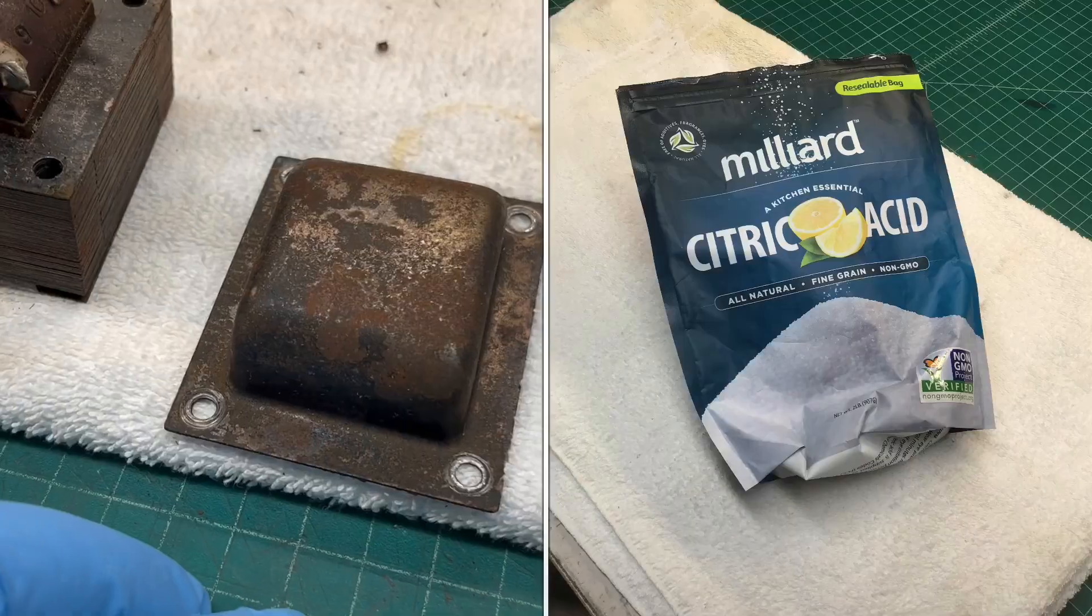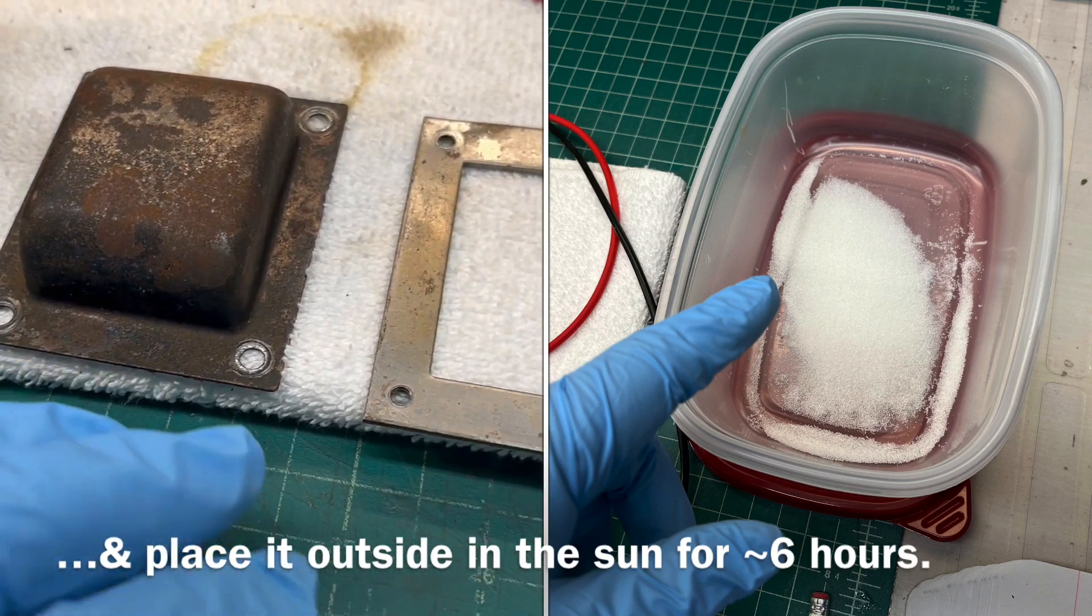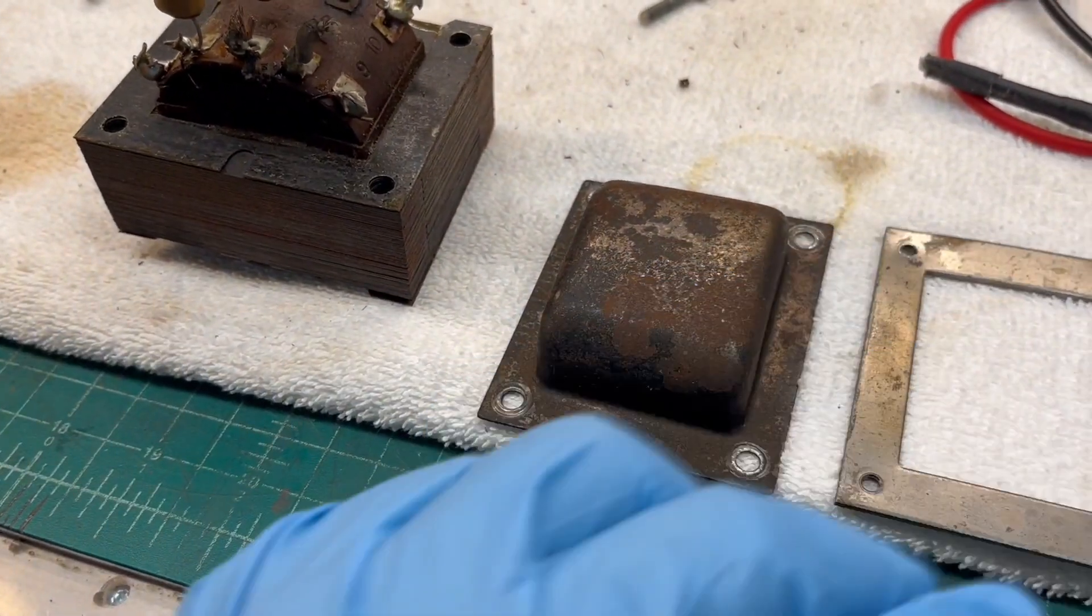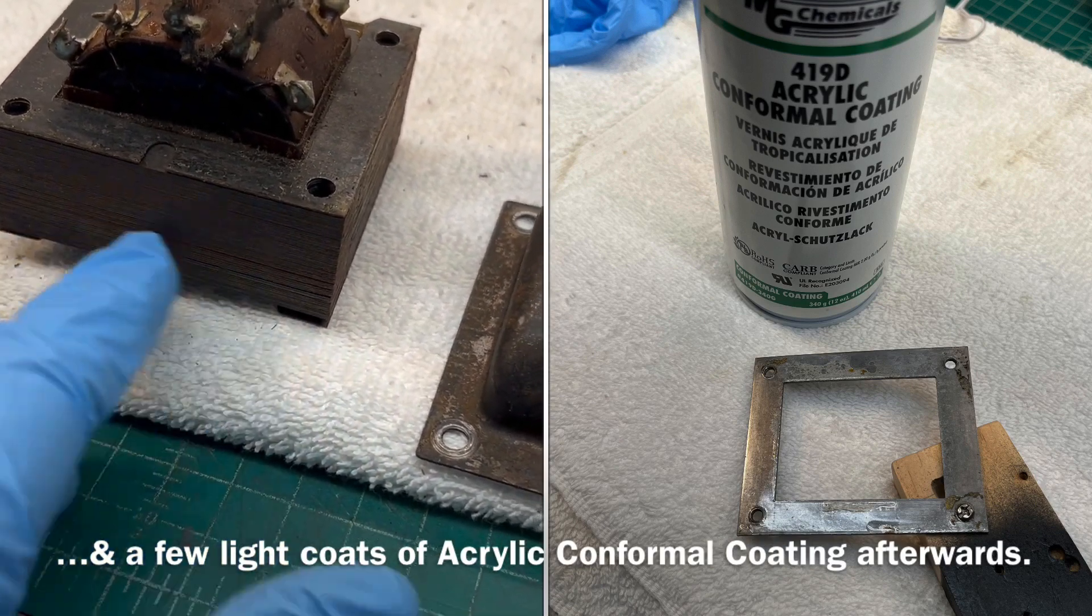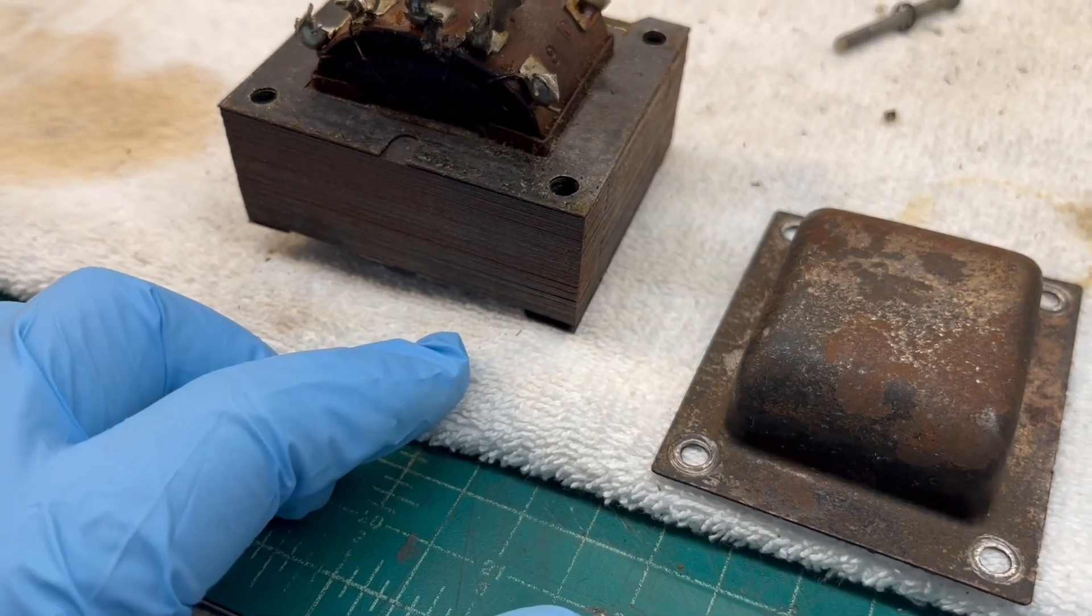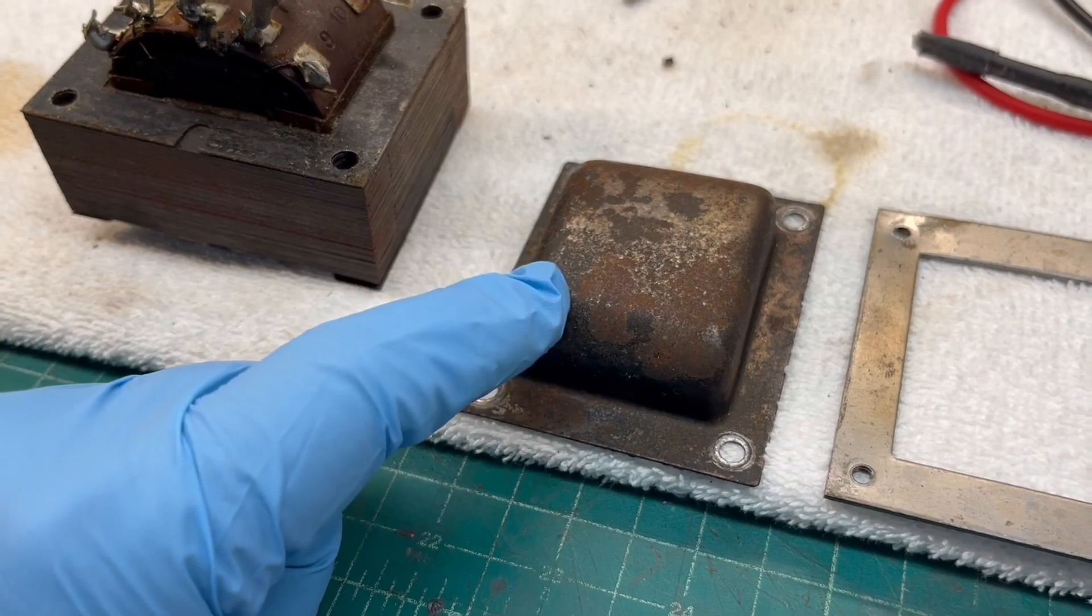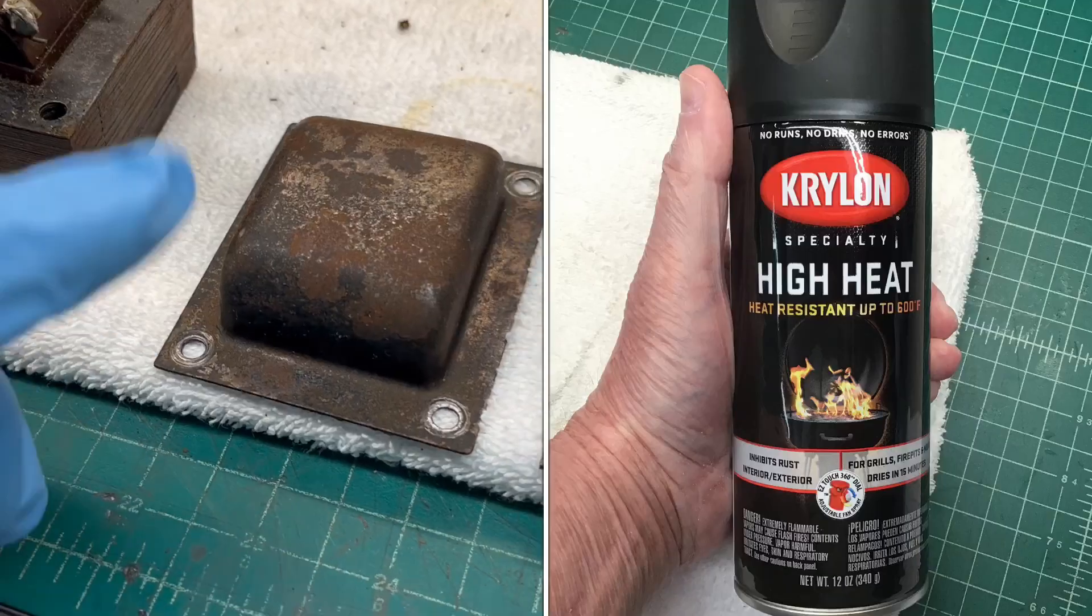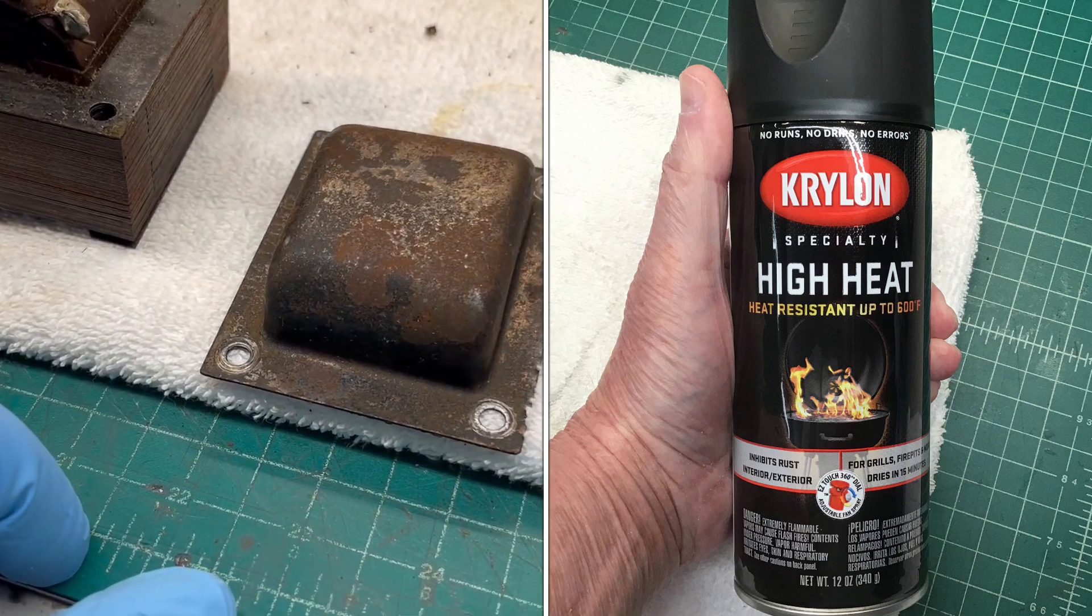I'll mix up a batch of my hot water citric acid with a little bit of dishwashing detergent. The outside plate for this side is actually in good shape, so just a little rust there to remove, and then I'll focus on the laminations themselves to remove some of the surface rust. Then I'll give the outside housing a nice coat of flat black paint. There's going to be some imperfections here, pitting, etc.